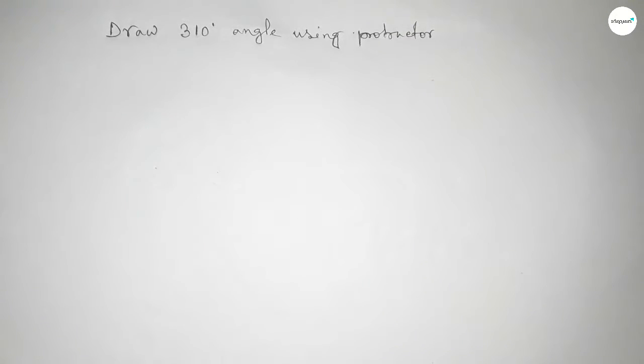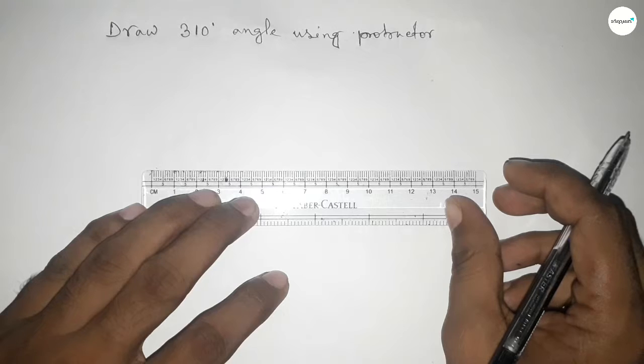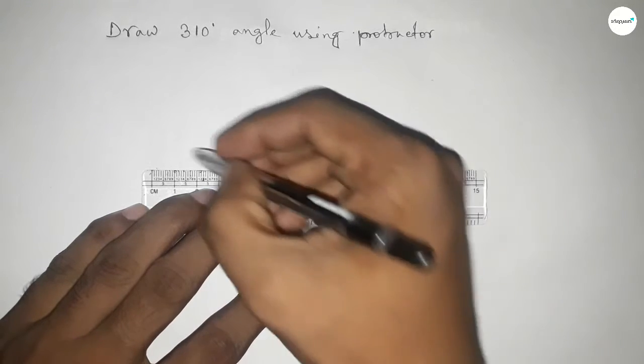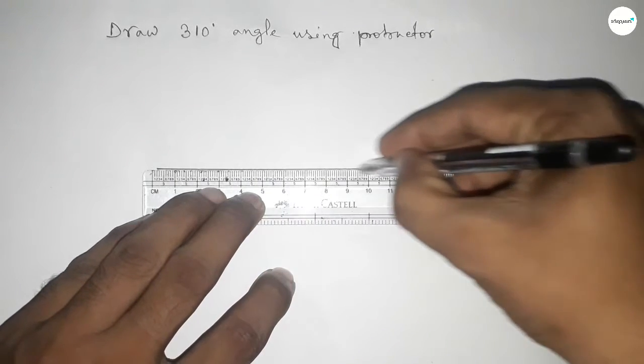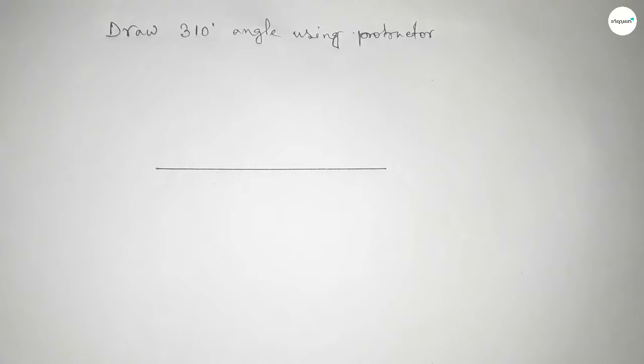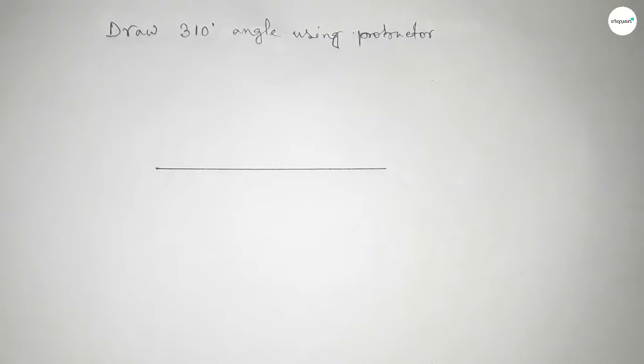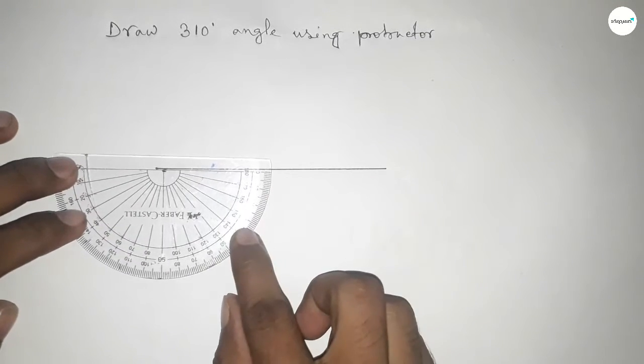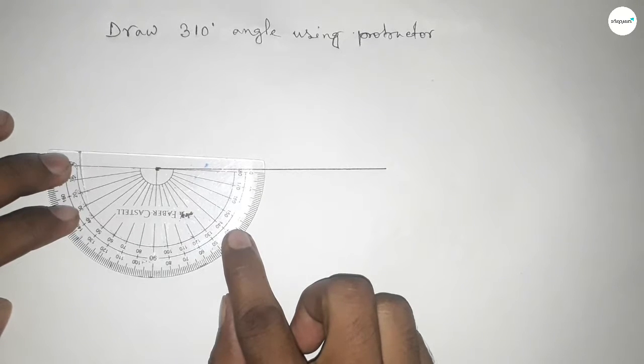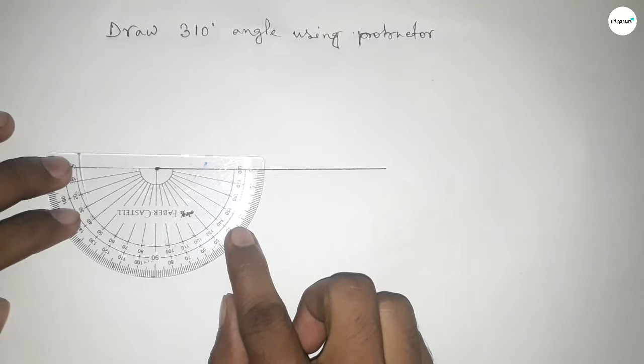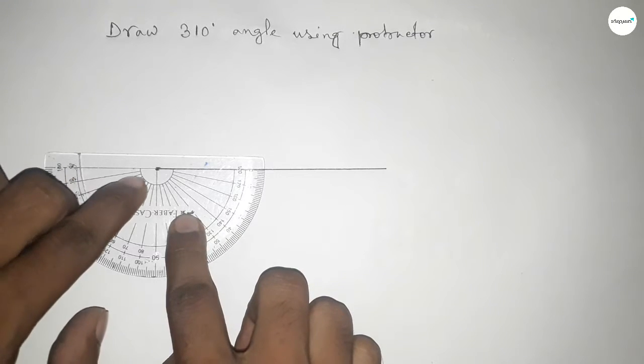So let's start the video. First of all, we have to draw a straight line of any length. Drawing a line here, next pointing out to draw a 310-degree angle on this point. Now putting the protractor on the line, then counting the angle.